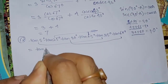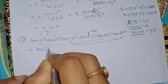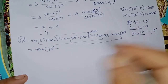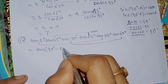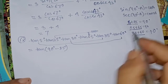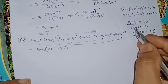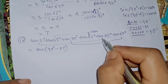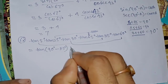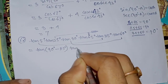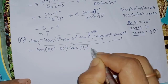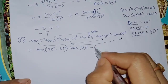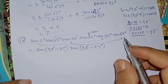5 everywhere. 10 is 90 degrees minus 5 is 85. 5 everywhere. 2 everywhere. 5 everywhere. 10 is 25 everywhere. 95 degrees minus 65. 65 everywhere.